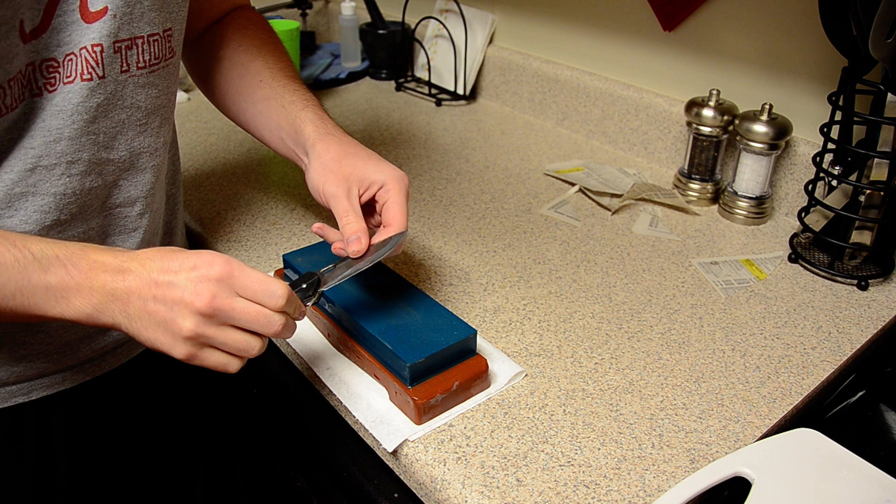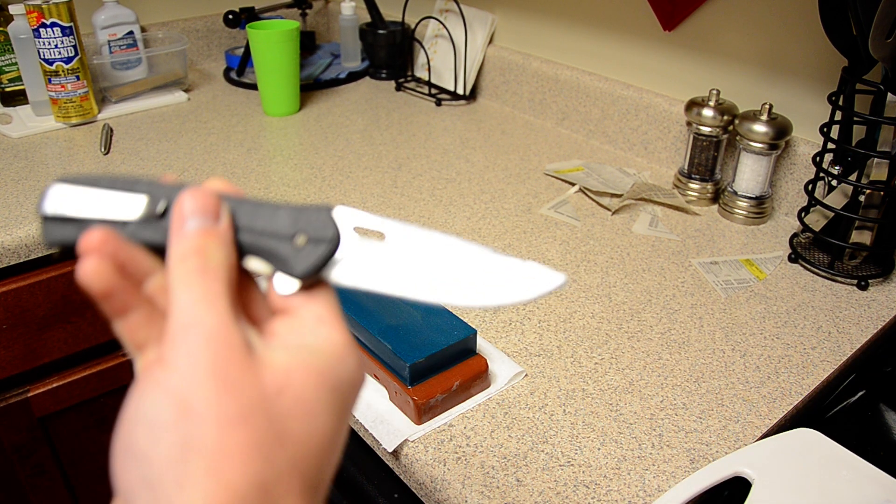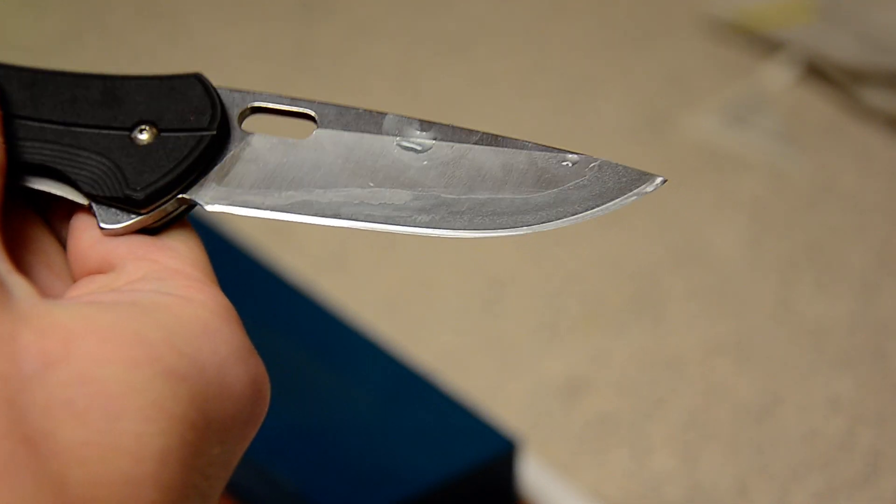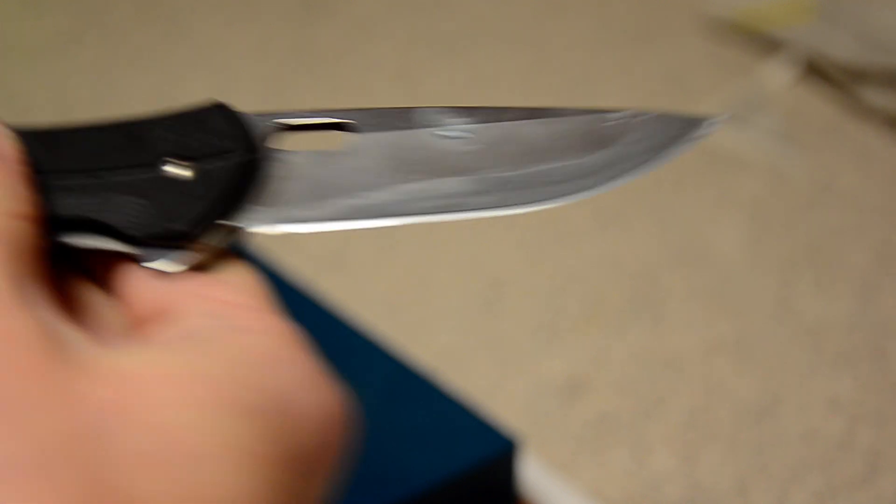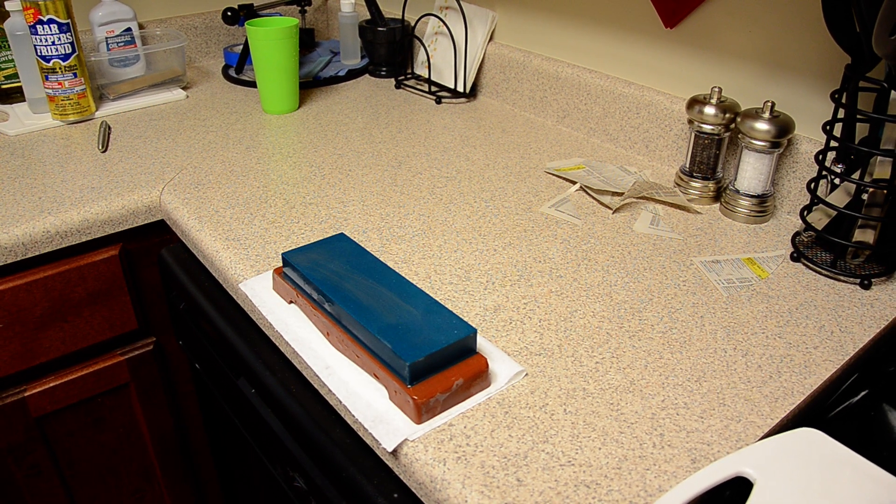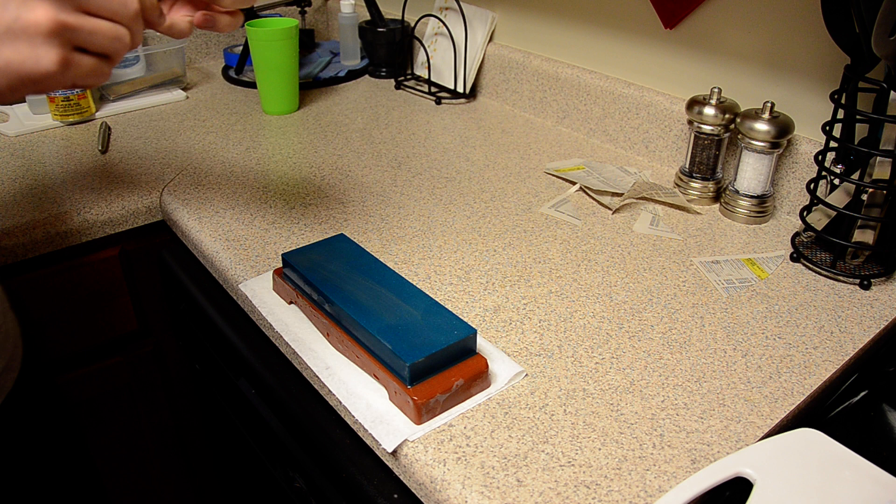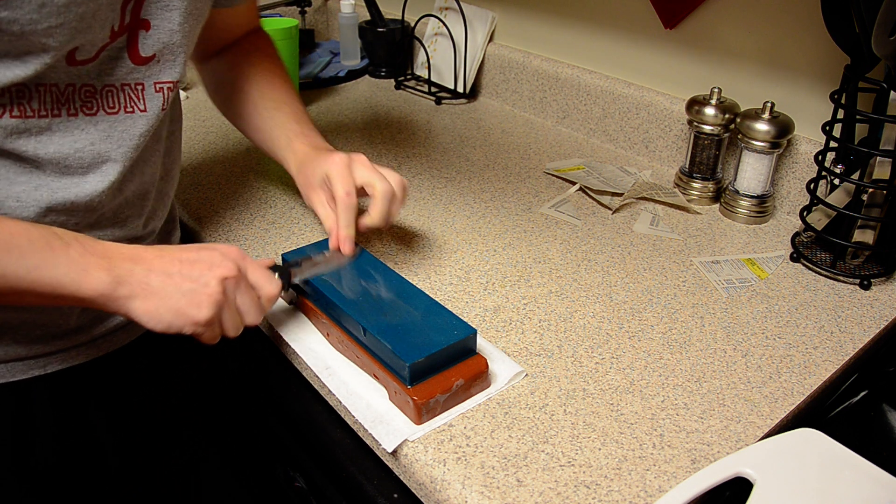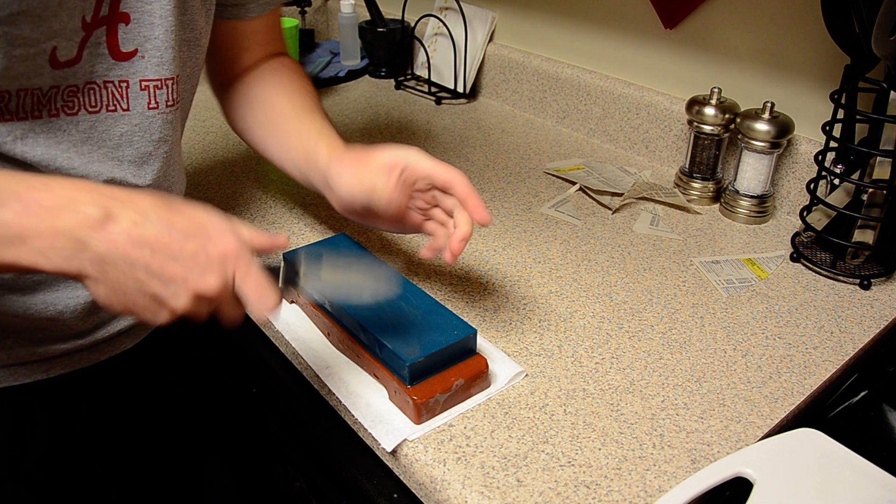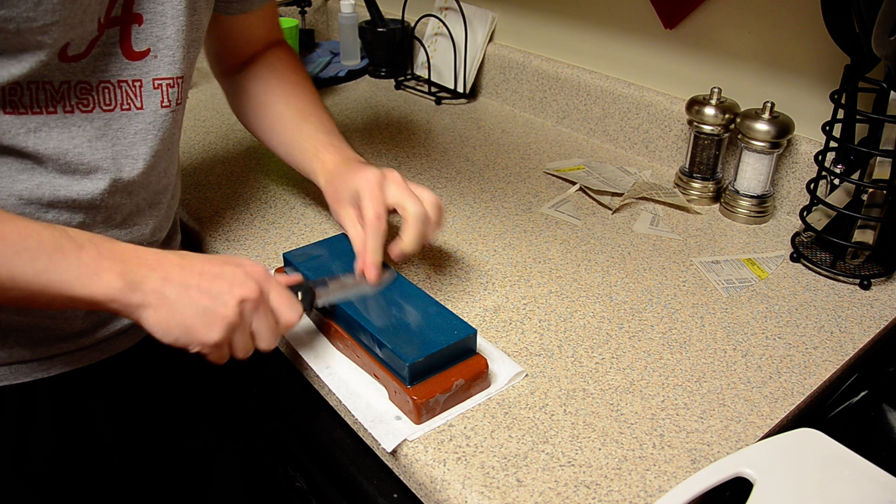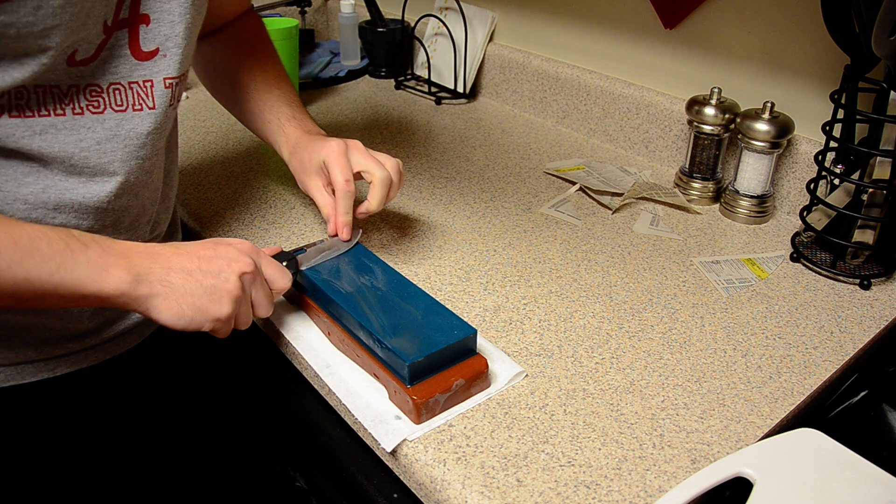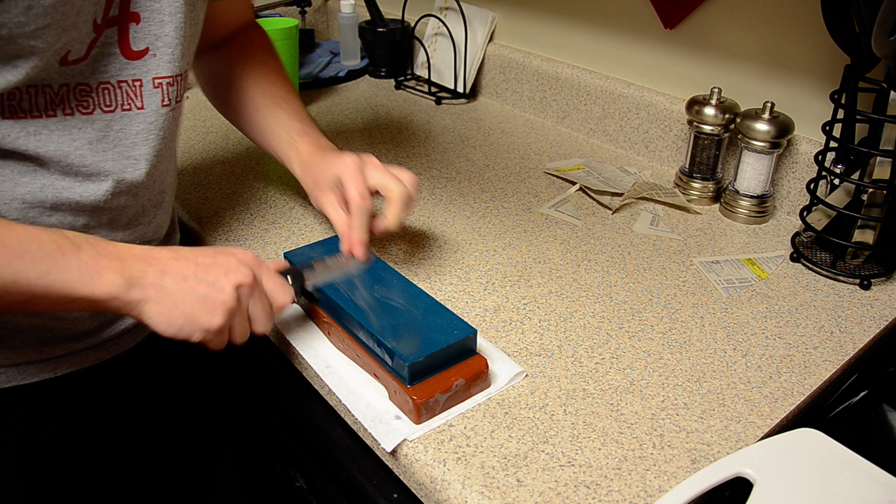All I'm trying to do is form a burr. I'm gonna go ahead and show this—all of the sharpie is gone now, that's what you want to see. You can see the edge, that's 600 grit edge, it needs to look like that. I'm not sure I have a burr yet. Yeah I think I do, so I'm gonna go ahead and switch to the other side.